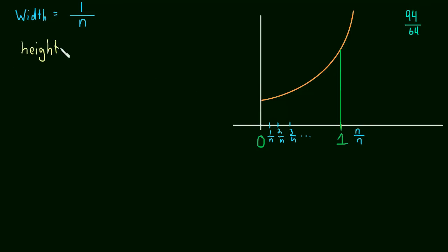The heights of the rectangles. Well, the heights are just going to be f of 1 over n for the first rectangle, f of 2 over n for the second rectangle. So this is what we really stressed in the last video. The height of the i-th rectangle is going to be f of i over n.